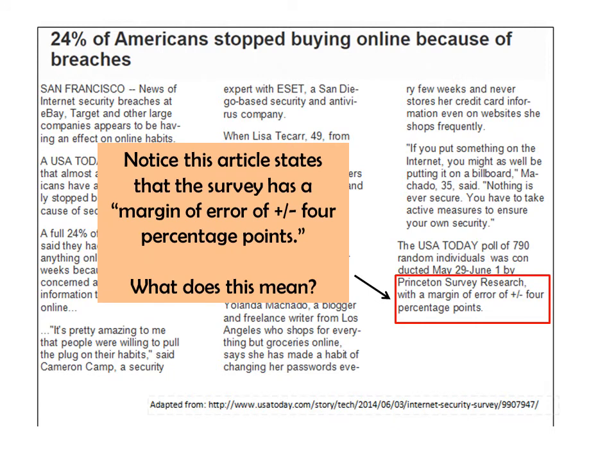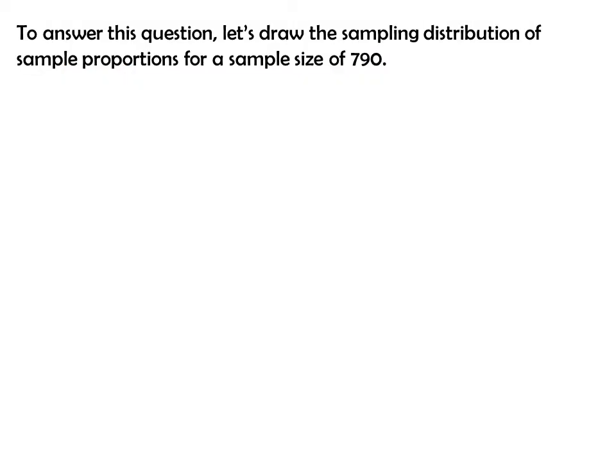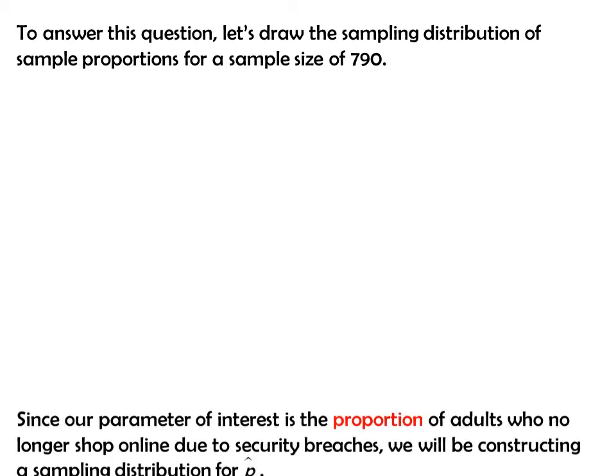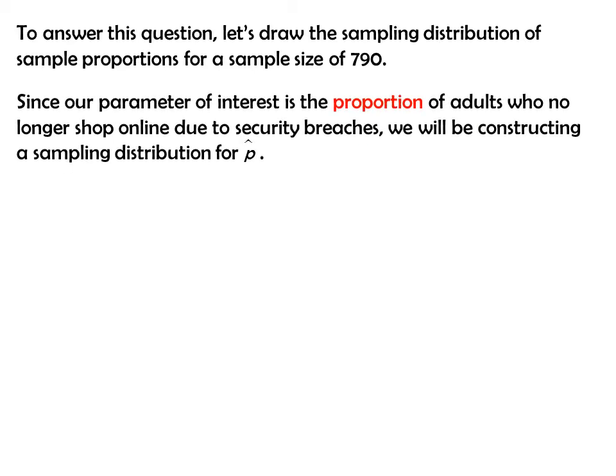Notice this article states that the survey has a margin of error of plus or minus 4 percentage points. What does this even mean? To answer this question, let's draw the sampling distribution of sample proportions for a sample size of 790. Since our parameter of interest is the proportion of adults who no longer shop online due to the security breaches, we will be constructing a sampling distribution for p-hat.